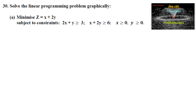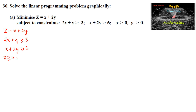Solve the linear programming problem graphically: minimize z = x + 2y, subject to the constraints 2x + y ≥ 3, x + 2y ≥ 6, and x ≥ 0, y ≥ 0.